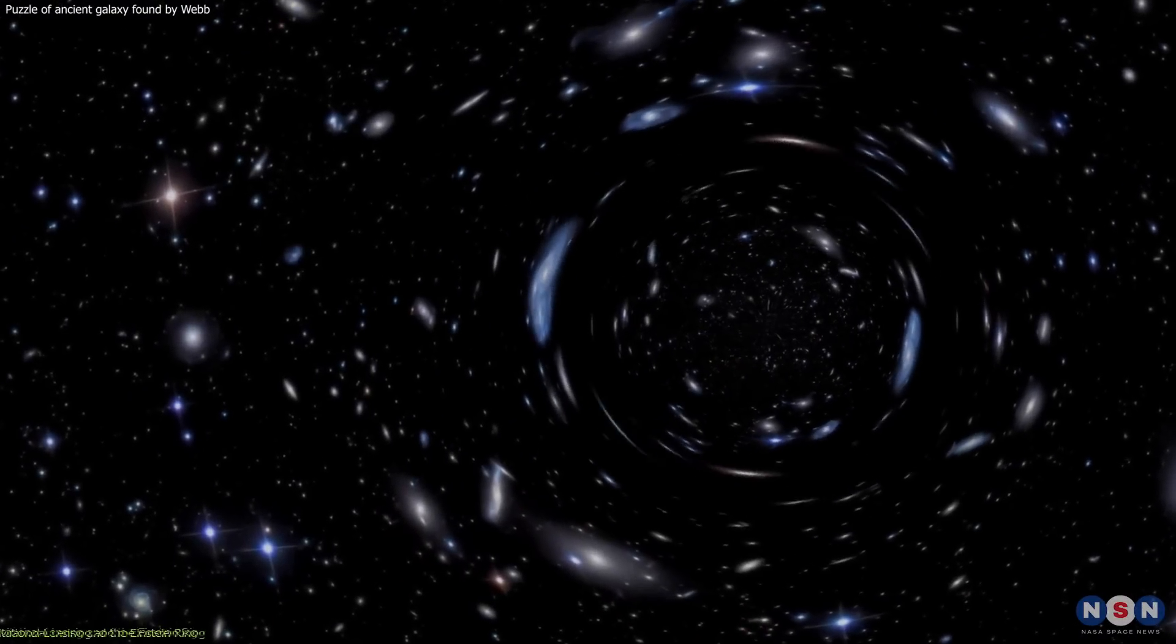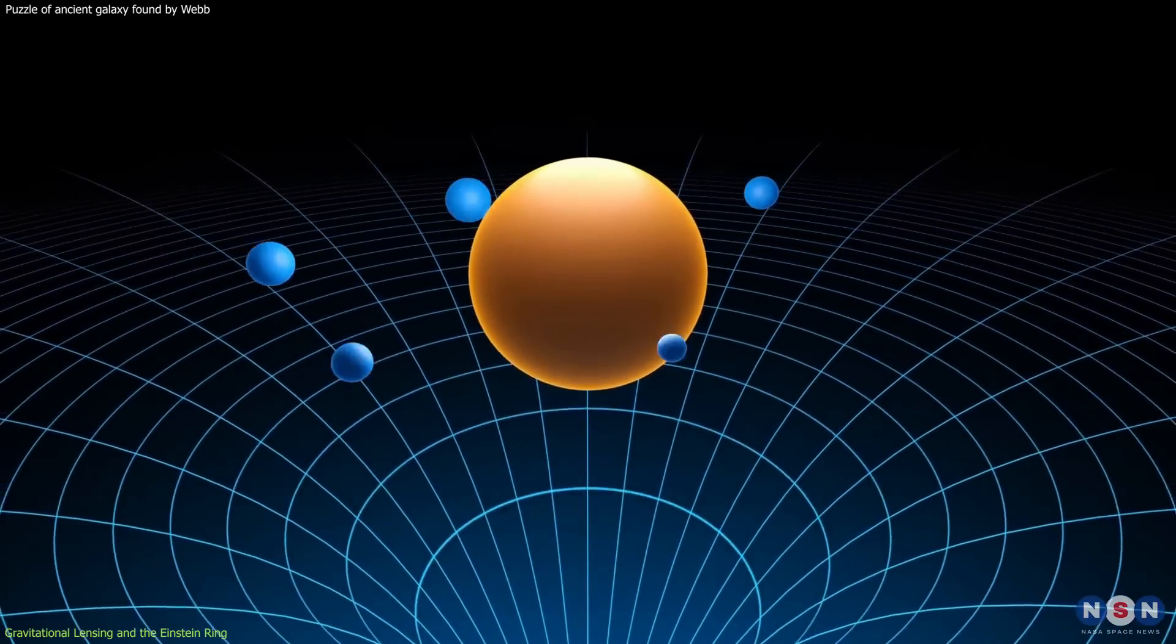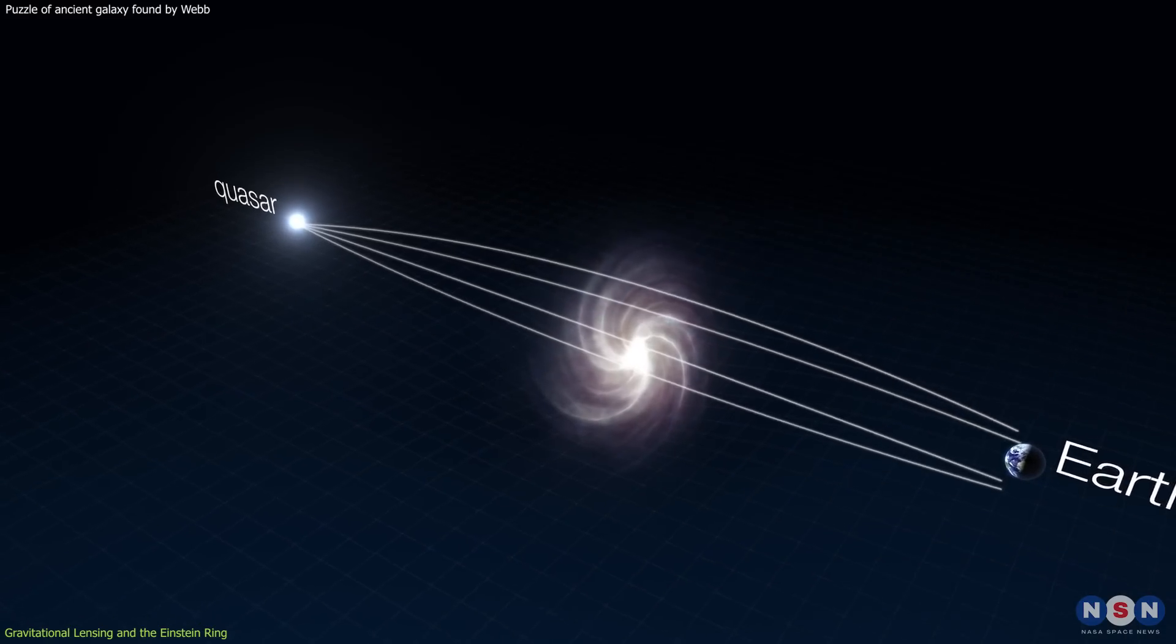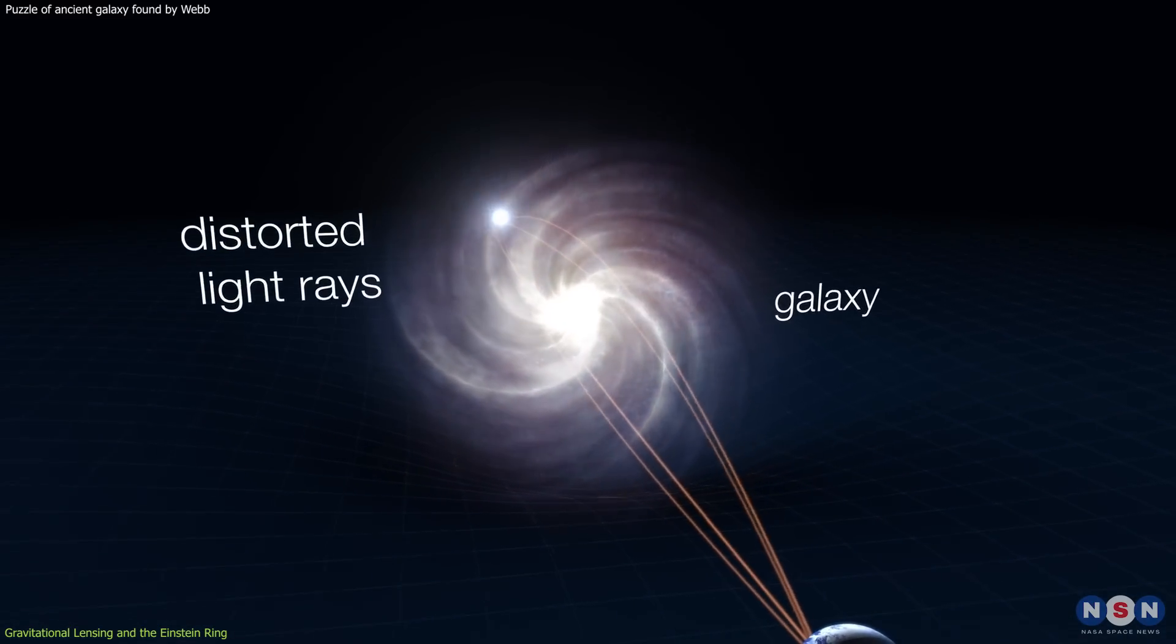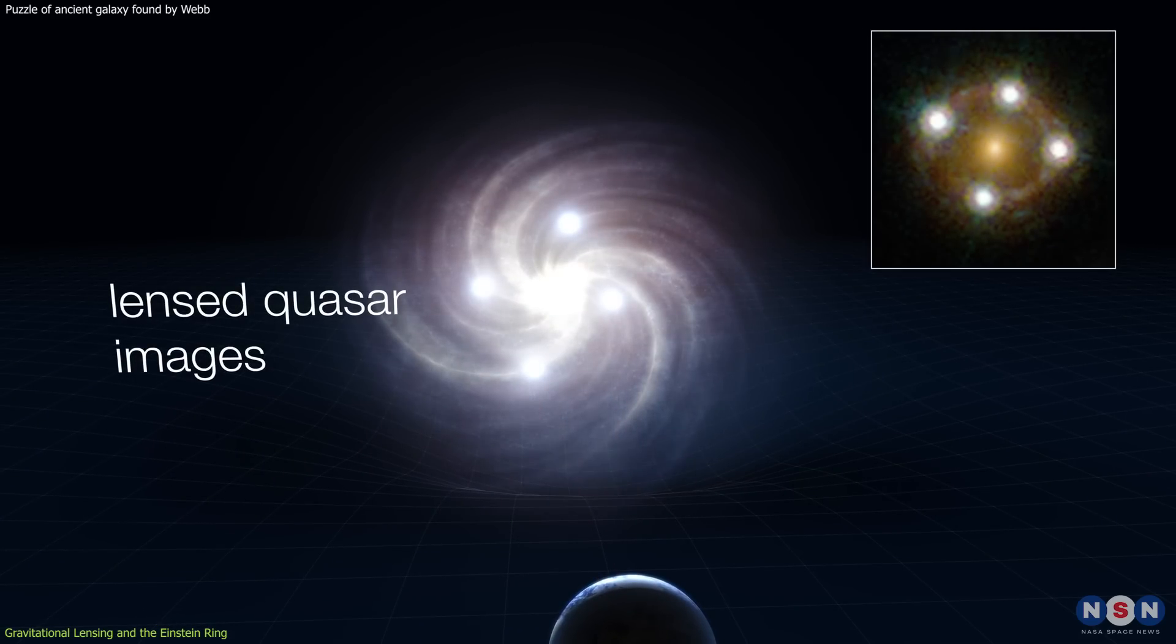Gravitational lensing is not merely a beautiful cosmic phenomenon. It is a profound testament to the predictions of Albert Einstein's theory of general relativity. This remarkable effect occurs when a massive object, like a galaxy, bends the fabric of spacetime, causing the light from objects behind it to be magnified and distorted.